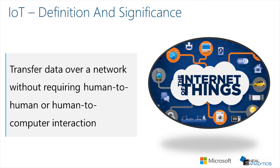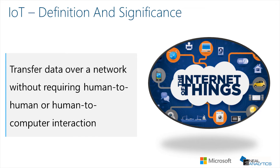The Internet of Things can be used to help businesses run more efficiently and improve their ability to cater to consumers. Now, businesses have been using this technology for a long time, but it's only recently that advancements in cloud and sensor technology have enabled the Internet of Things to be more ubiquitous and commonplace.